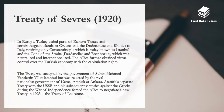This treaty was accepted by the government of Sultan Mehmed VI in Istanbul. However, it was rejected by the rival nationalist government of Kemal Atatürk in Ankara. Atatürk's separate treaty with the USSR and his subsequent victories against the Greeks during the Turkish War of Independence forced the Allies to negotiate a new treaty in 1923 — the Treaty of Lausanne. So the Treaty of Sèvres, signed with the Ottoman leadership, had to be revisited after the Turkish War of Independence.